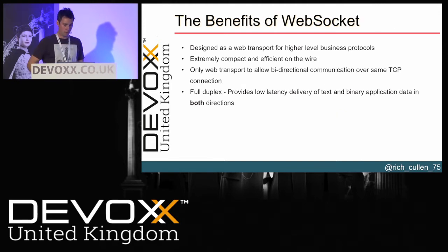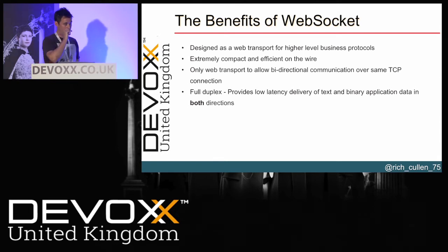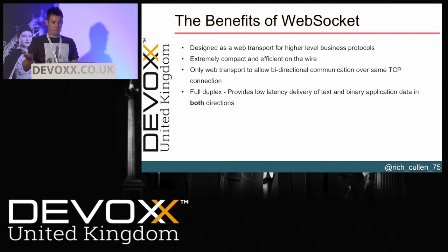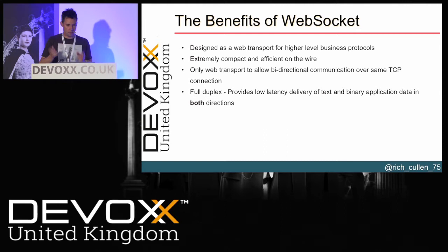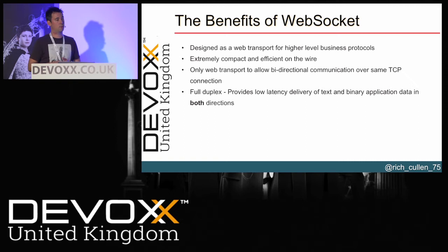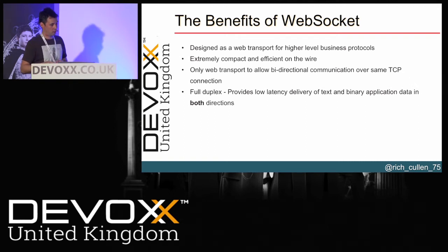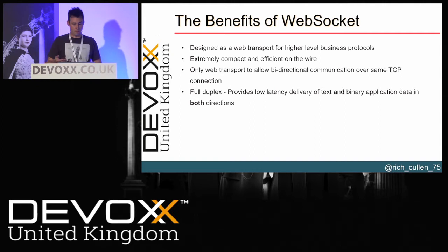As you'd expect, it supports encrypted channels — where you've got HTTP and HTTPS, you've got WS and WSS. The main advantage is the fact that it's full-duplex. You can send text and binary data, and as soon as you've established that connection, data can flow in any direction at any time. There's less of this boundary between a client and a server, which maps very well to how we're building applications today — we're as much generators of data as we are consumers.